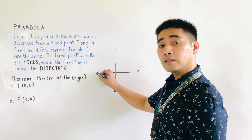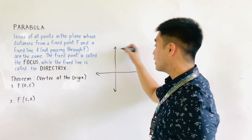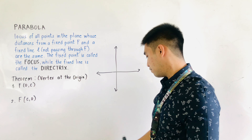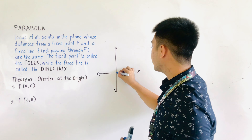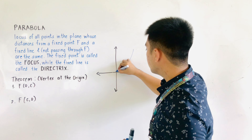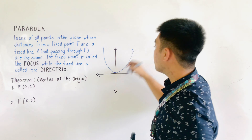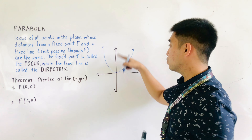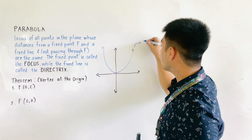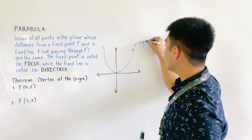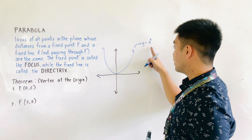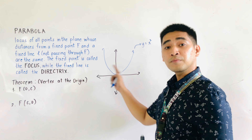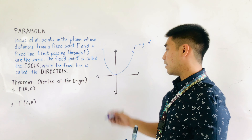Opening upward, opening downward, to the right, and to the left. If this is a parabola opening upward, always remember that we have a positive y value. If we have a positive y value, therefore this is y is equal to x squared. Why x squared? Because we have two values of x.